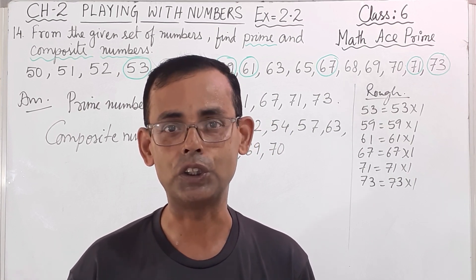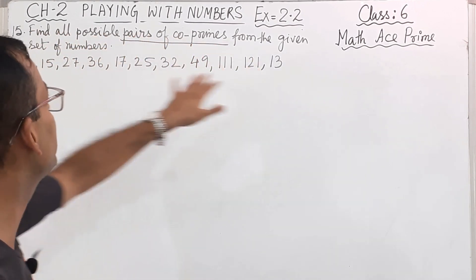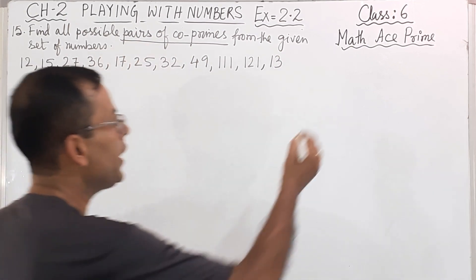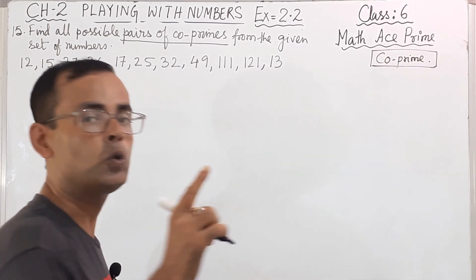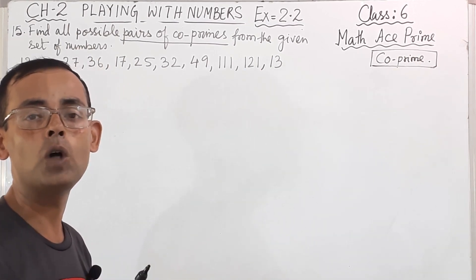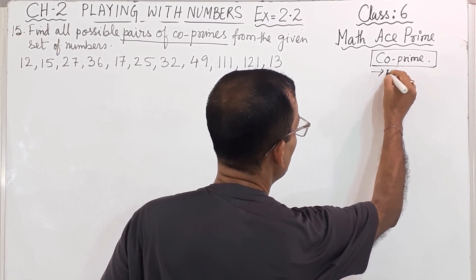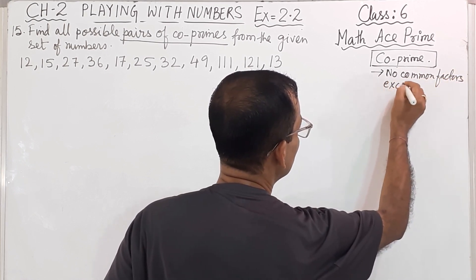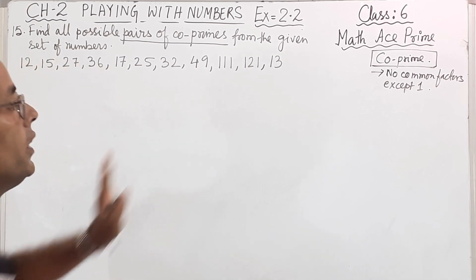Now we will solve the last sum of exercise 2.2 — question number 15: find all possible pairs of co-primes from the given set of numbers. Now, what is a co-prime? Two numbers are said to be co-prime if they do not have any common factors other than 1. Only 1 is the common factor and there is no other common factor — that is called co-prime.